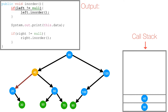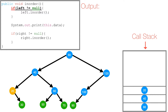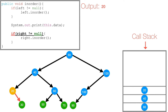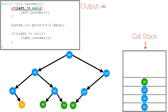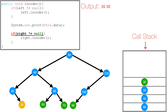Then again we check if 40's left is not null — it's not — so we call in-order on 40's left subtree, and 20 is pushed to the call stack. We check if 20's left is null — it is — so we print 20. Then we check if 20's right is not null — it's not — so we call in-order on 20's right subtree. 30 is pushed to the call stack. 30's left is null, so we print 30. Then 30's right is also null, so 30 gets popped off the call stack.